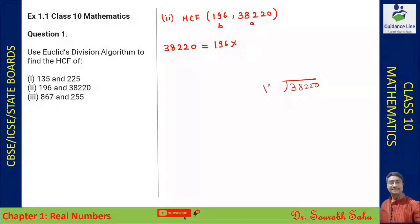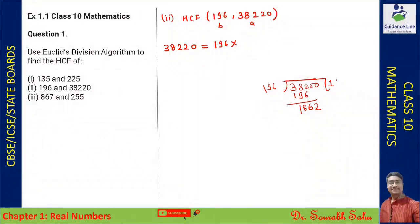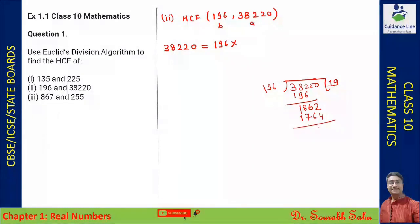Dividing 38220 by 196: 196 multiplied by 195 gives 38220. We get a remainder of 0 here.